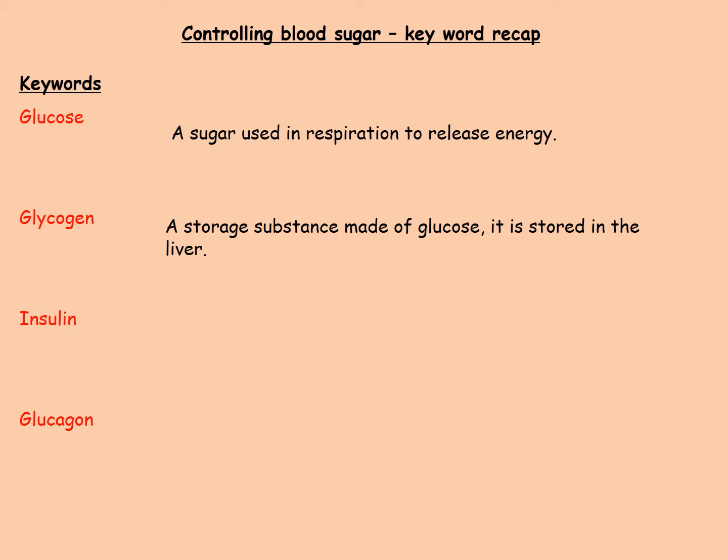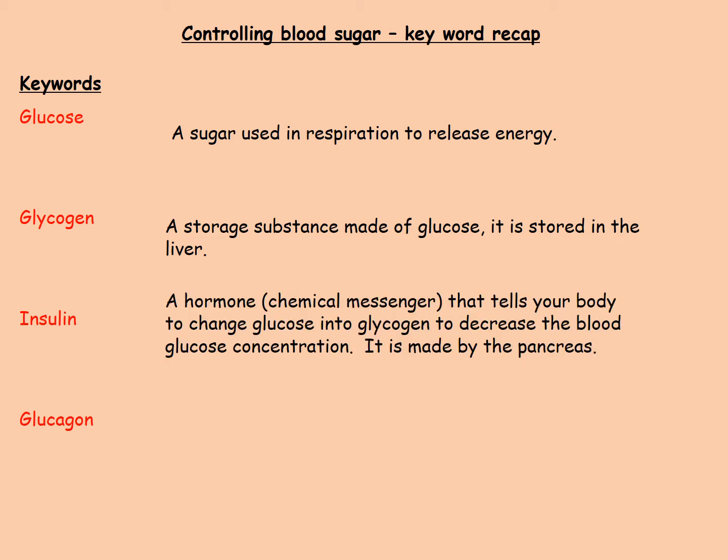Insulin is a hormone — a chemical messenger — produced in the pancreas, which is an endocrine gland. It travels in the blood from the pancreas to cells around the body, including liver and muscle cells, where it causes blood glucose concentration to decrease because cells take up glucose and turn it into glycogen.